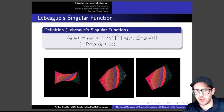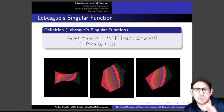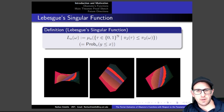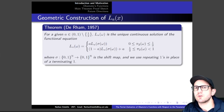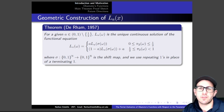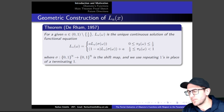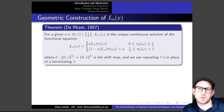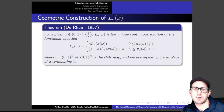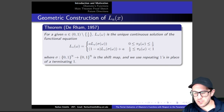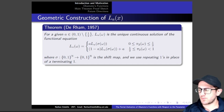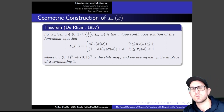Because we want to understand local properties of this surface, we also need to understand how to generate the function from just one parameter value, and that was done by Durham in 1957. Given some parameter value that's not one-half, the Lebesgue singular function is the unique continuous solution of the functional equation. Here, sigma is the shift map on the full two-shift, and we use repeating ones in place of terminating ones to make sure this is well defined.